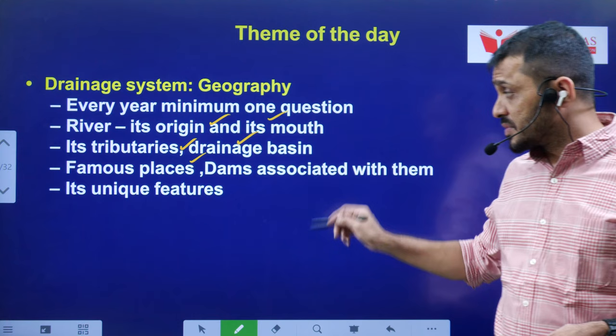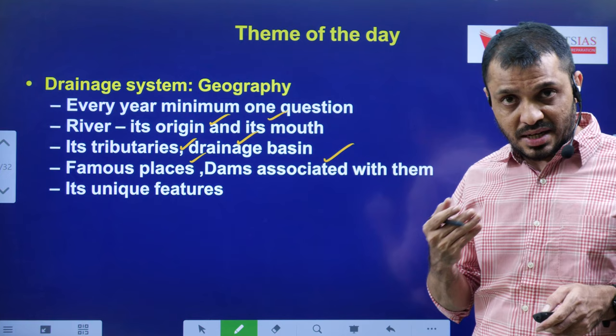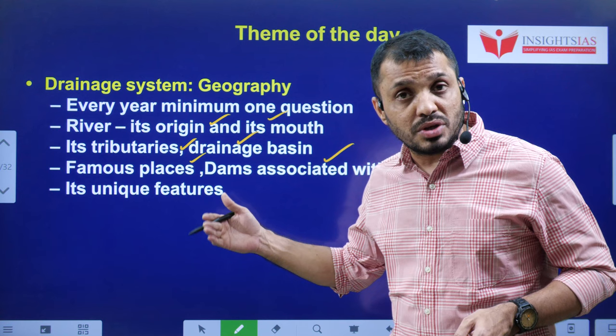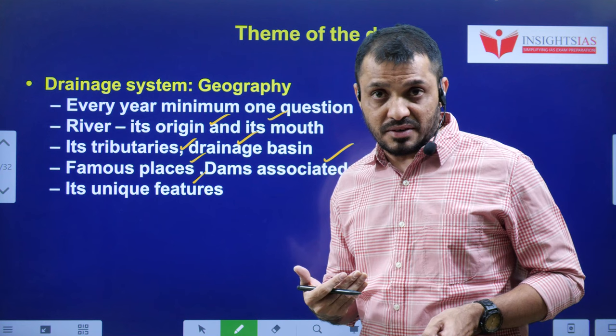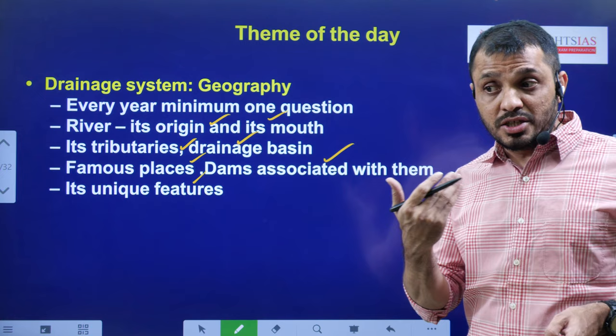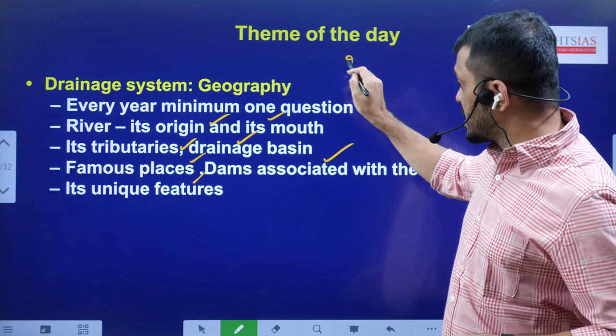Previously they've given dams on one side of a column and the corresponding state on the other side — like Ghataprabha, Indira Sagar — so you have to know about the dam as well as the state. Apart from that, you should have a fair idea about waterfalls forming on particular rivers and their unique features, such as rift valley rivers, west-flowing rivers, and canyons. In 2022, Gandikota Canyon from Andhra Pradesh appeared — they asked which river it is related to.